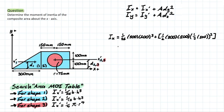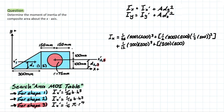Moving on to shape 2, we have a plus sign because the rectangular blue shape is still retained in our composite. Following a similar rule, we take the local moment of inertia: (1/12) × 300 × (200)³, plus the area of the rectangle — 300 × 200 — multiplied by dy squared. For the rectangle, dy is half of the total height, so it's simply 100 mm squared.